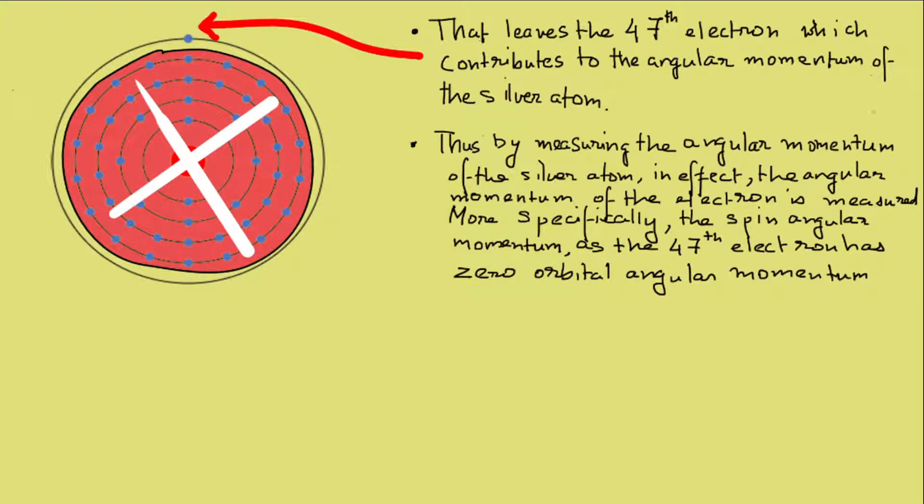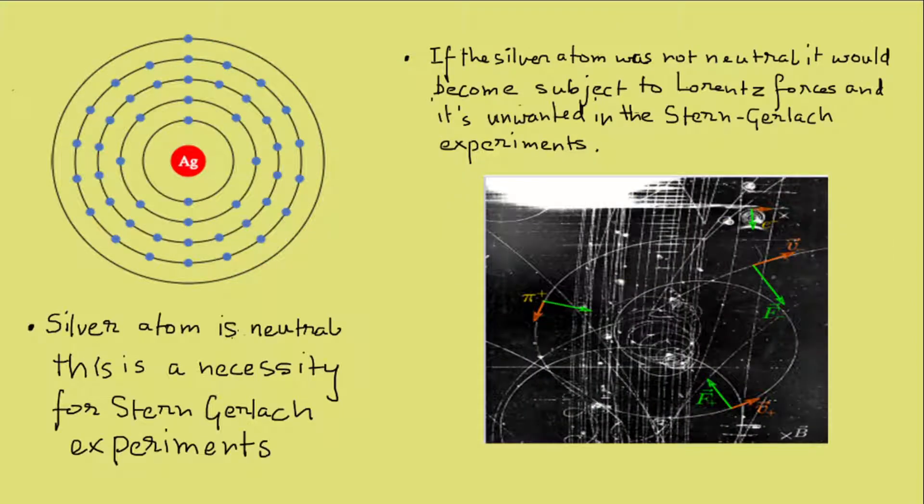Yet another consideration here is to have the atom neutral in charge, which the silver atom already has. This is necessary because otherwise the particle would become subject to Lorentz forces as shown in the picture from Wikipedia. It would cause the positive and negative charges to curve in the magnetic field, which is not desirable in this experiment. We want it to only deflect due to the magnetic dipole of the electron.